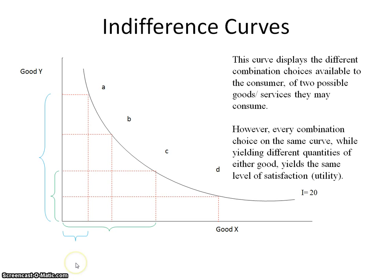While we are seeing A, B, C, and D, four possible combination choices, every point along this curve represents different combination choices for the consumer. But it is important to note that regardless of which combination choice is chosen along this curve, every combination choice on the same indifference curve will yield the same level of utility.